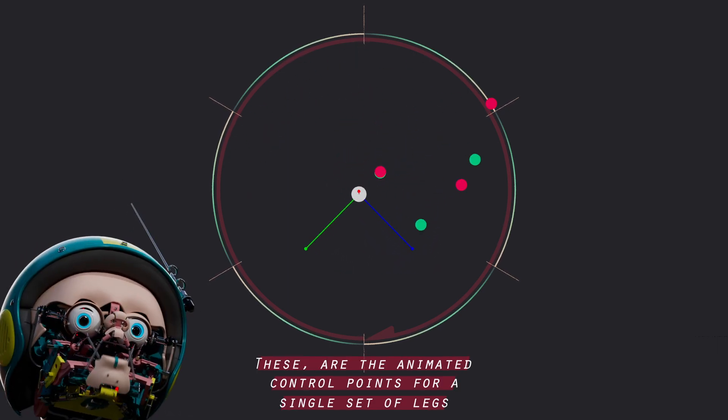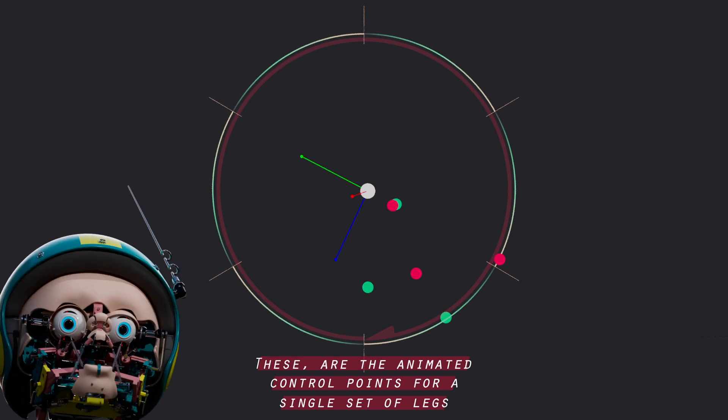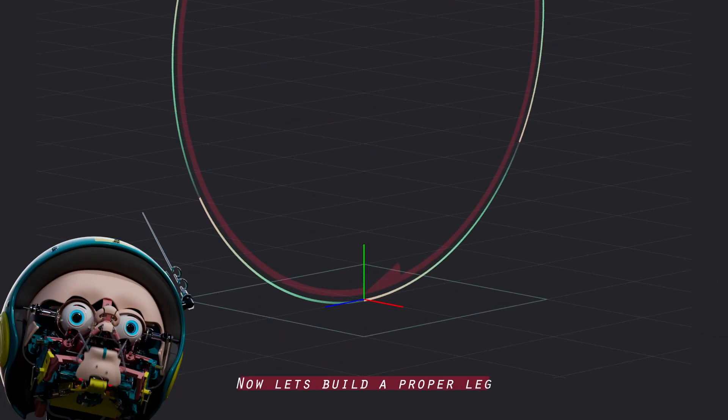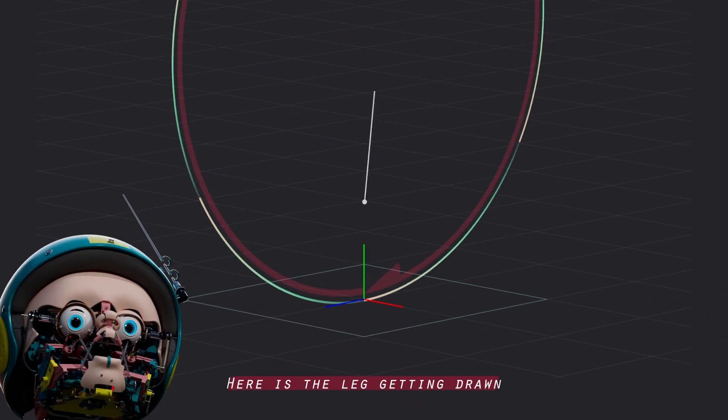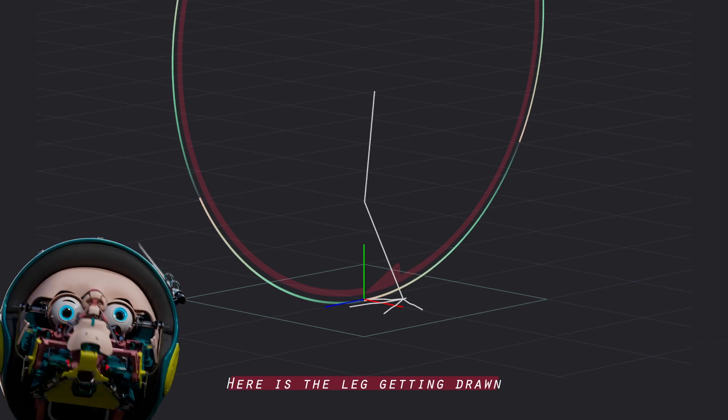These are the animated control points for single set of legs. Now let's build a proper leg. Here is the leg getting drawn. Mirror it.